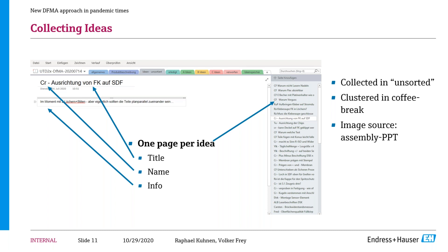A nice advantage of having the PowerPoint slides with assembly steps is that you can copy and paste pictures from them directly into the idea page and do your scribbling on that to make clear what you're proposing — you don't have to paint everything from scratch if you have a nice starting point to show what the differences are.